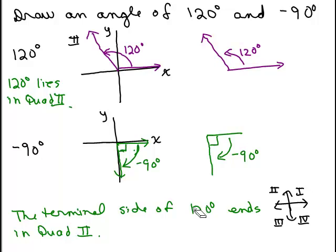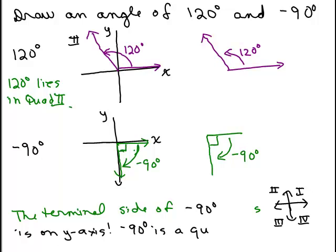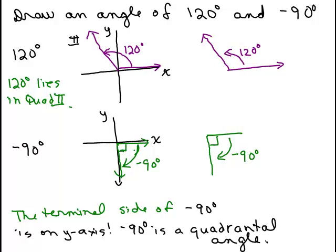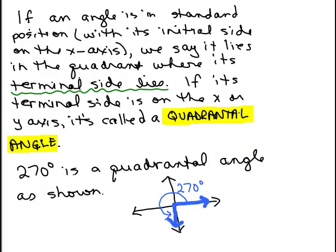Same thing if we want to figure it out for negative 90 degrees. The terminal side in negative 90 degrees... it's not in a quadrant. It's right here on the y-axis. So the terminal side of 90 is on the y-axis. That means negative 90 is a quadrantal angle.